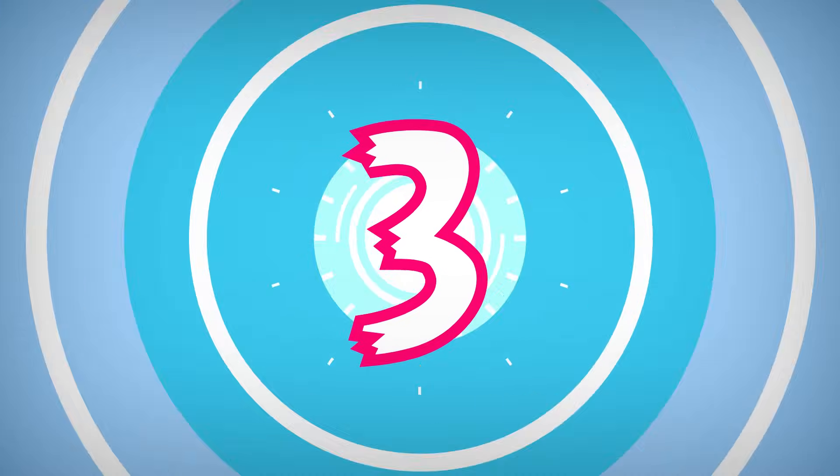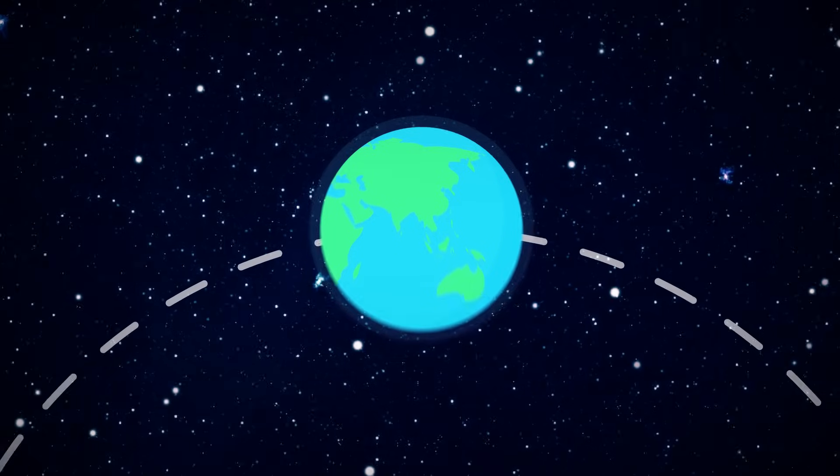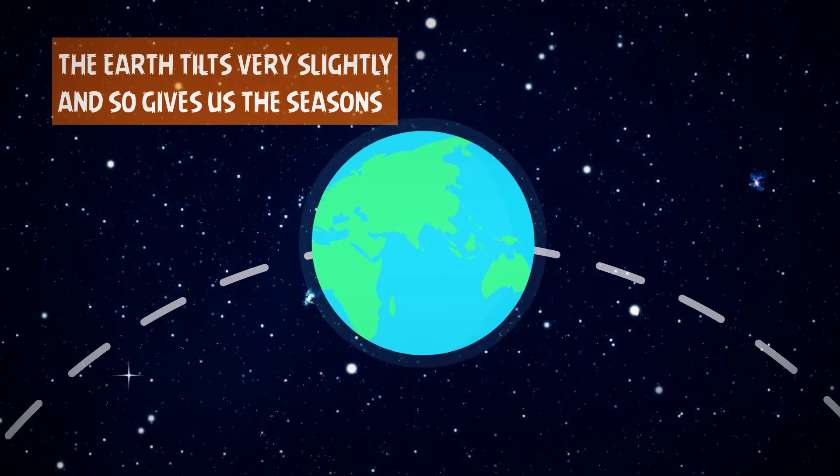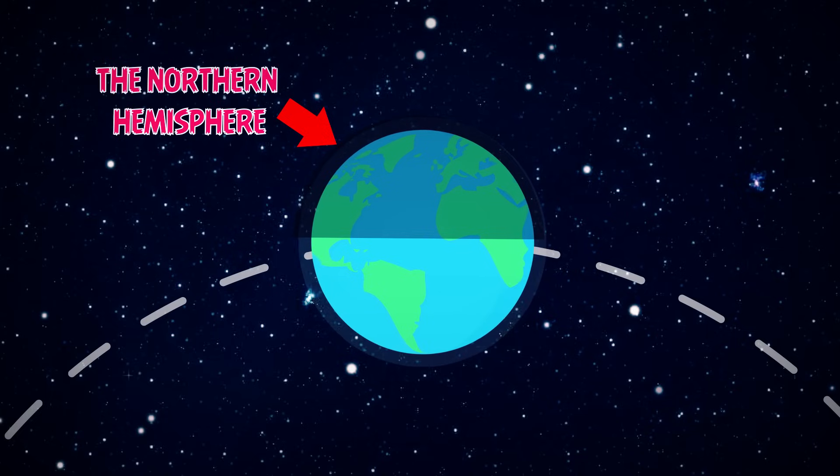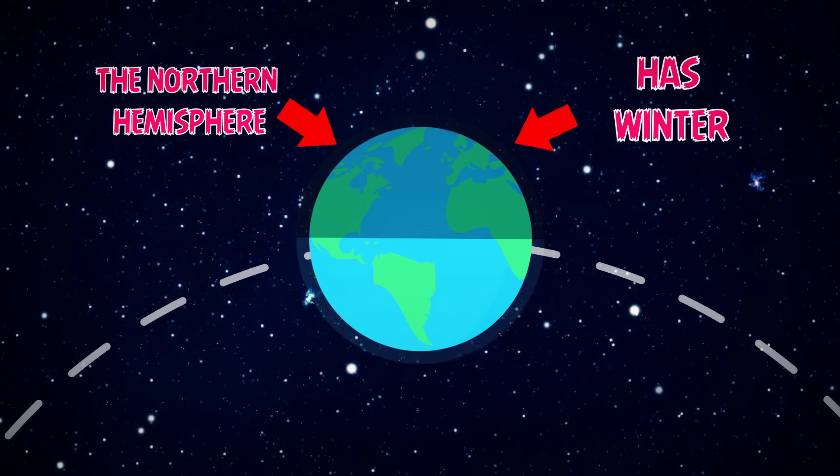Number 3. As the Earth orbits around the Sun, it tilts very slightly. And so, it gives us the seasons. When the Earth has tilted so that the northern half of the Earth is a little away from the Sun, the northern hemisphere, meaning half of the Earth's sphere, has winter.